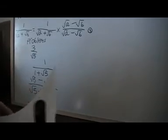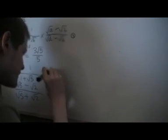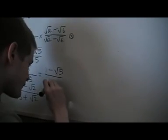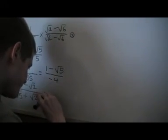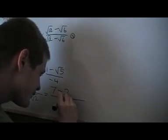And now I'll write down the answers for you. The answer to this problem here is going to be 3 root 5 over 5. Then the next problem is going to be 1 minus root 5 over minus 4. And then the last problem is going to be 7 minus 2 root 10 over 3.